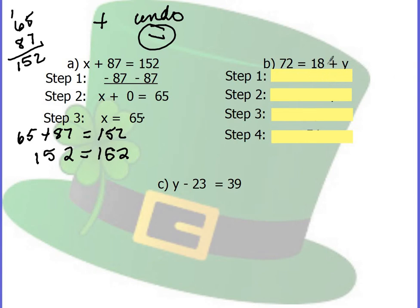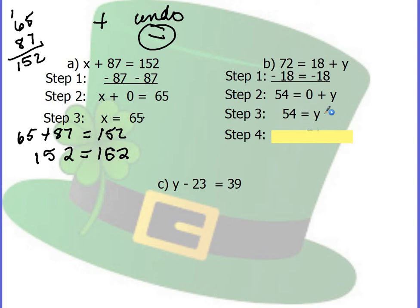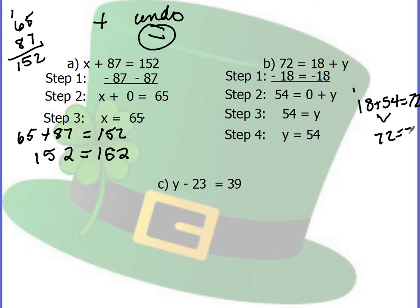Let's try another one. I have an addition problem again and I'm adding 18. So I know that to undo plus 18, I have to subtract 18. But what I do to one side, I have to do to the other. So I end up with 54 equals 0 plus y. I know 0 plus y is always y, the number itself. Then I flip it to put my variable on the left and my solution on the right. I check my work: 18 plus 54 should equal 72. 8 plus 4 is 12, carry the 1; 1 plus 5 is 6, plus 1 is 7. 72 equals 72, so my answer is correct.